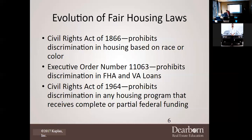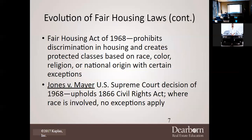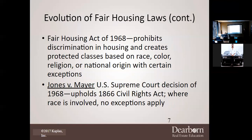In 1964, the Civil Rights Act prohibited discrimination in any housing program that receives complete or partial federal funding — you cannot discriminate in any federally funded housing program, period. Then the Fair Housing Act of 1968 prohibited discrimination in housing and created protected classes based upon race, color, religion, or national origin, with certain exceptions.